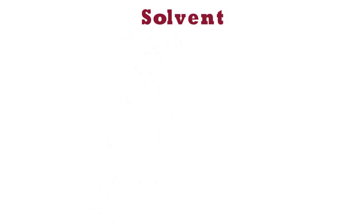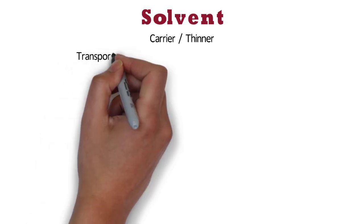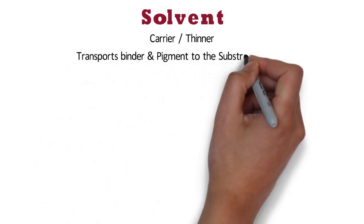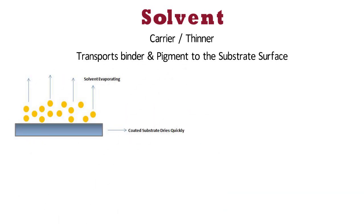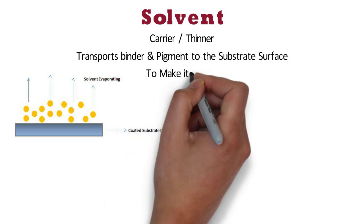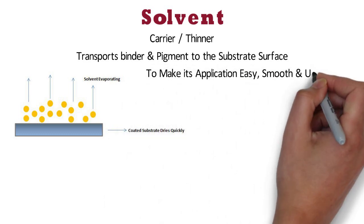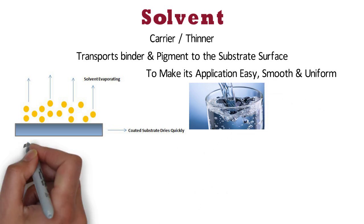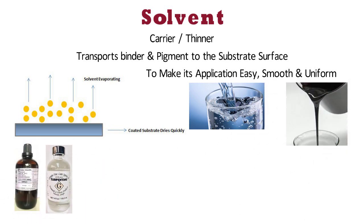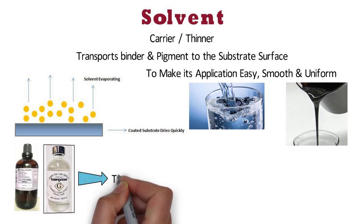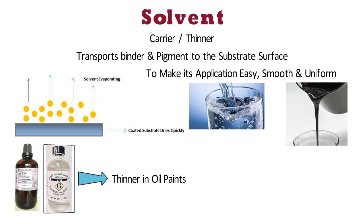Solvent is also known as carrier or thinner. It is simply responsible for transporting the binder and pigment to the substrate surface, and it evaporates as the paint dries. It is added to paints in order to make its application easy, smooth, and uniform. Water, petroleum spirits, turpentine, and coal tar hydrocarbons are some of the commonly used solvents. Turpentine is generally used as thinner in oil paints, while in emulsion paints, water is used as thinner.